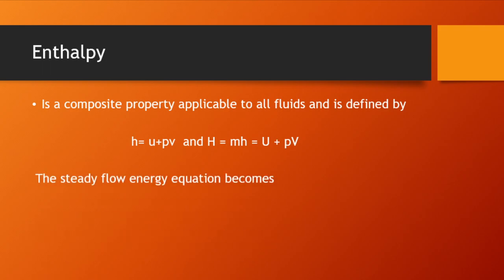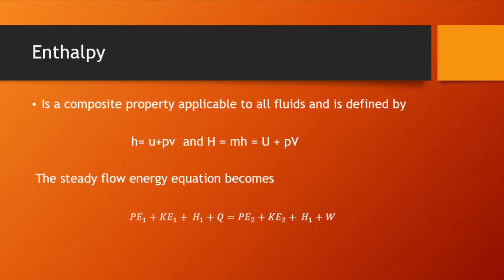The steady flow energy equation becomes: enthalpy 1 plus Q equals enthalpy 2 plus W, where the flow work and internal energy terms at inlet and outlet are combined into the respective enthalpies h1 and h2.